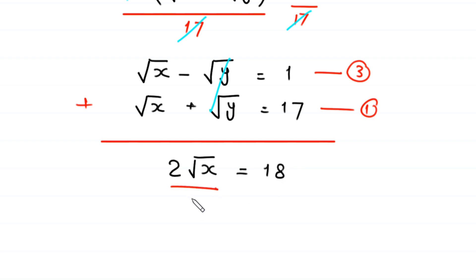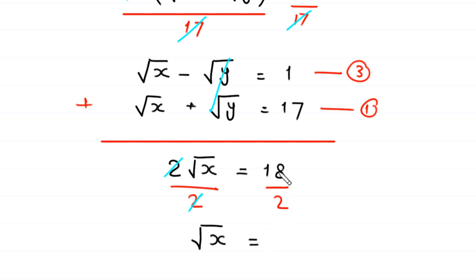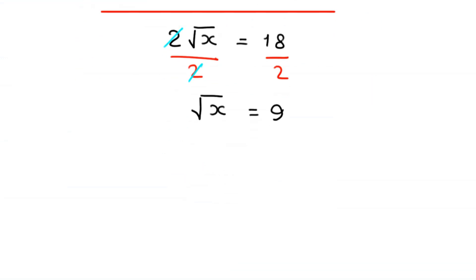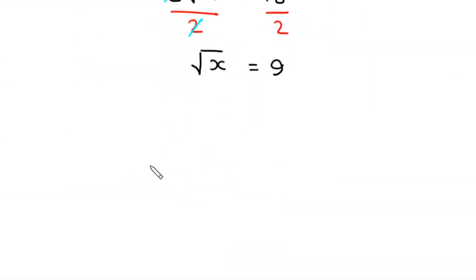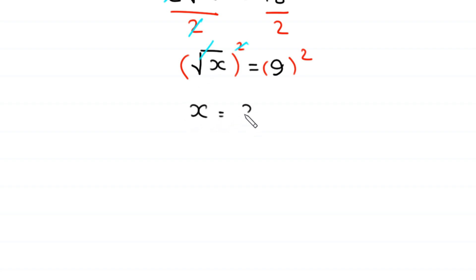We divide both sides by 2, so the 2s cancel, leaving square root of x equals 18 divided by 2, which is 9. We then square both sides of this equation. The square cancels with the square root, giving us x equals 81.